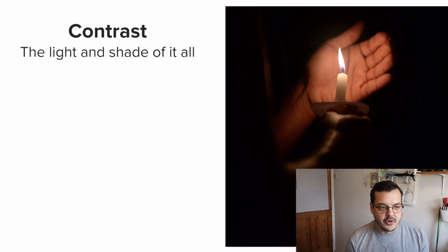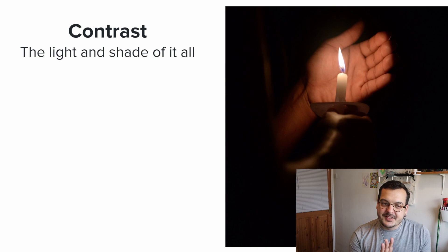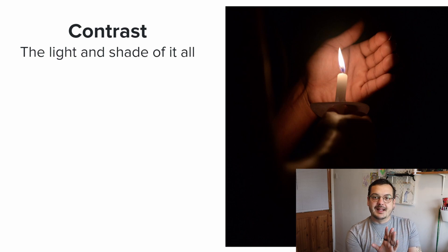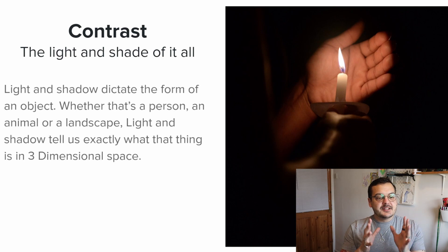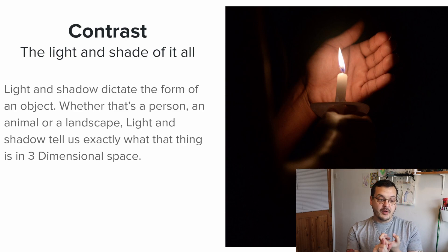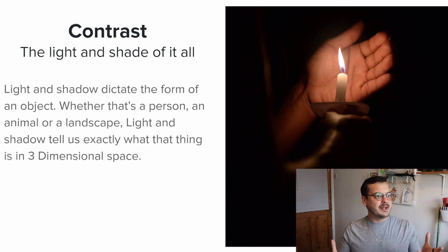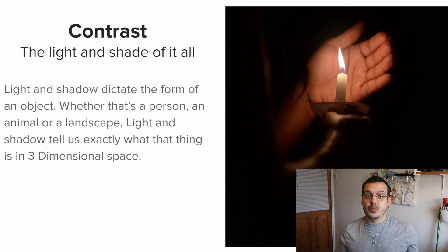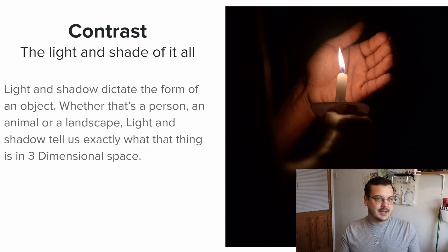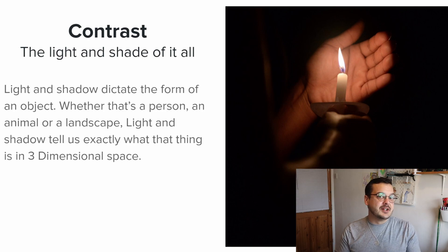Let's start with Contrast — the light and shade of it all. This is a subject most of you will be familiar with, but it does bear repeating. Light and shadow dictate the forms of an object, whether that's a person, an animal, or a landscape. Light and shadow tell us exactly what that thing is in three-dimensional space. When we're trying to create a sense of reality, we need to feel that piece within the real world — whatever the rules of that world are, it will have a basis in reality. Knowing form and shape is a fundamental art thing, and there are lots of different exercises you can do for this.